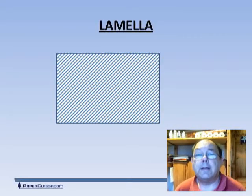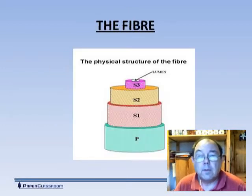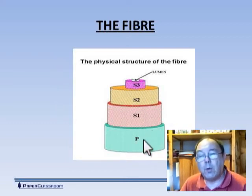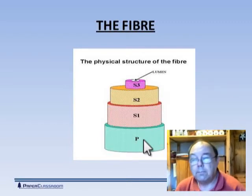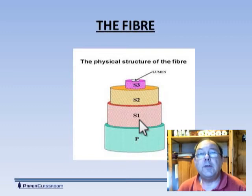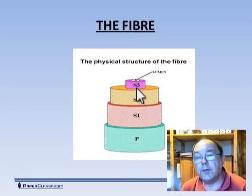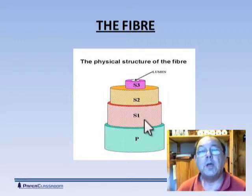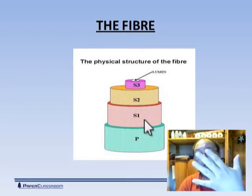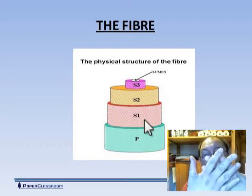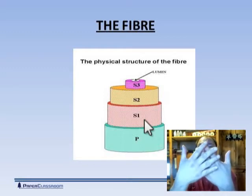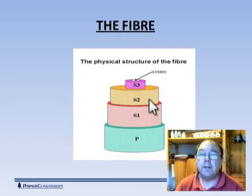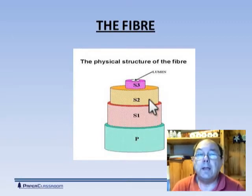A typical fibre has four walls. A primary wall where the fibrils are randomly oriented. The secondary wall is divided into three levels: the S1, the S2, and the S3. The S1 and S3 are very similar, having between four and six layers of fibrils all organised in a crisscross fashion — layer one corkscrews one way, layer two goes the other way, and so on. The S2 wall has the nickname of the 'papermaker's layer' and is some 30 to 150 layers thick.